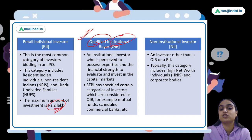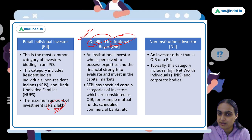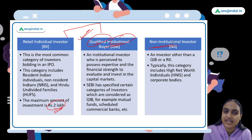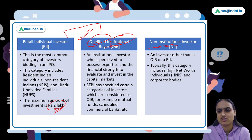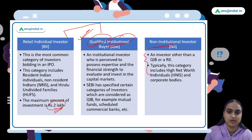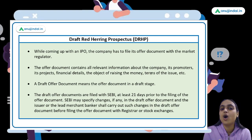QIBs have expertise in financial markets and are institutional investors. Examples include Scheduled Commercial Banks and Mutual Funds. Third, Non-Institutional Investors: those who fall in neither the retail investor nor QIB category. These are usually High Net Worth Individuals and certain corporate bodies. Their investment is typically more than two lakh rupees.